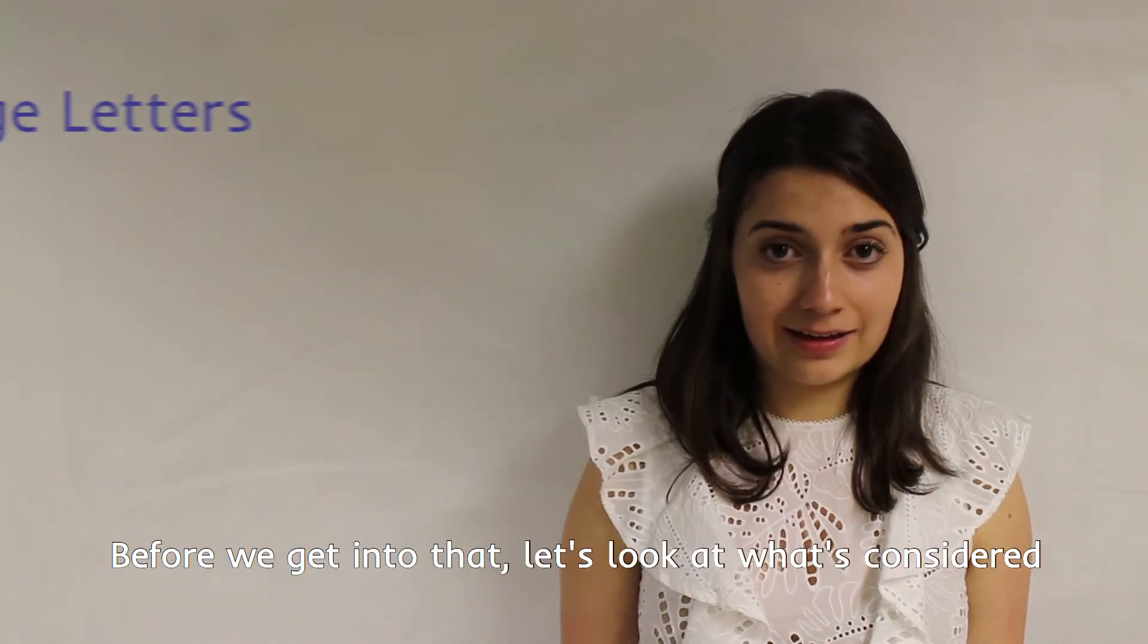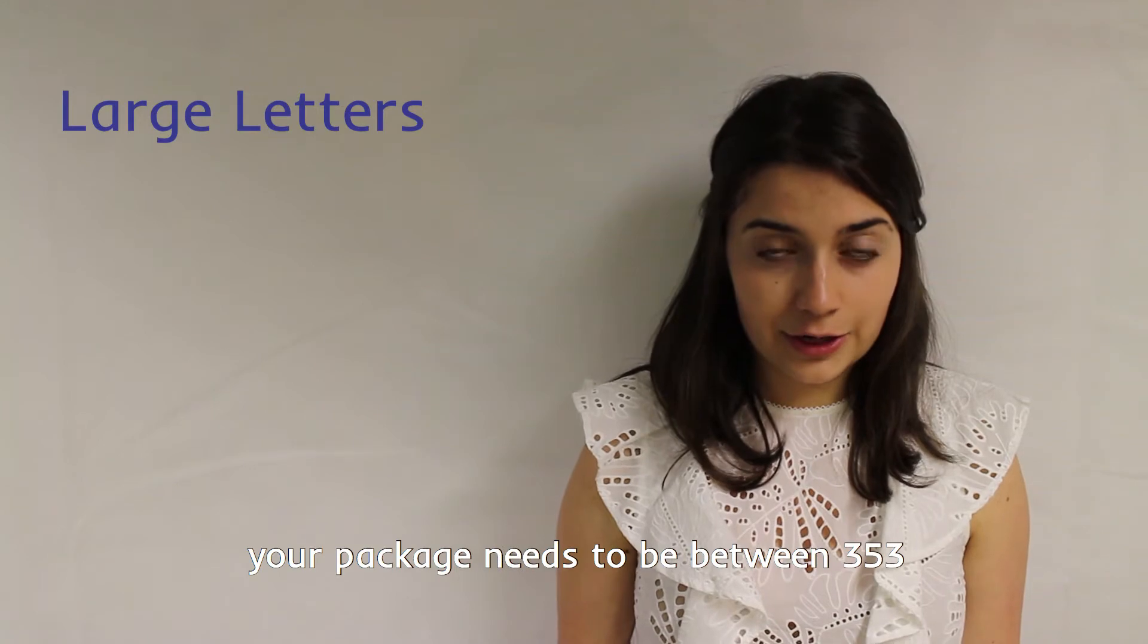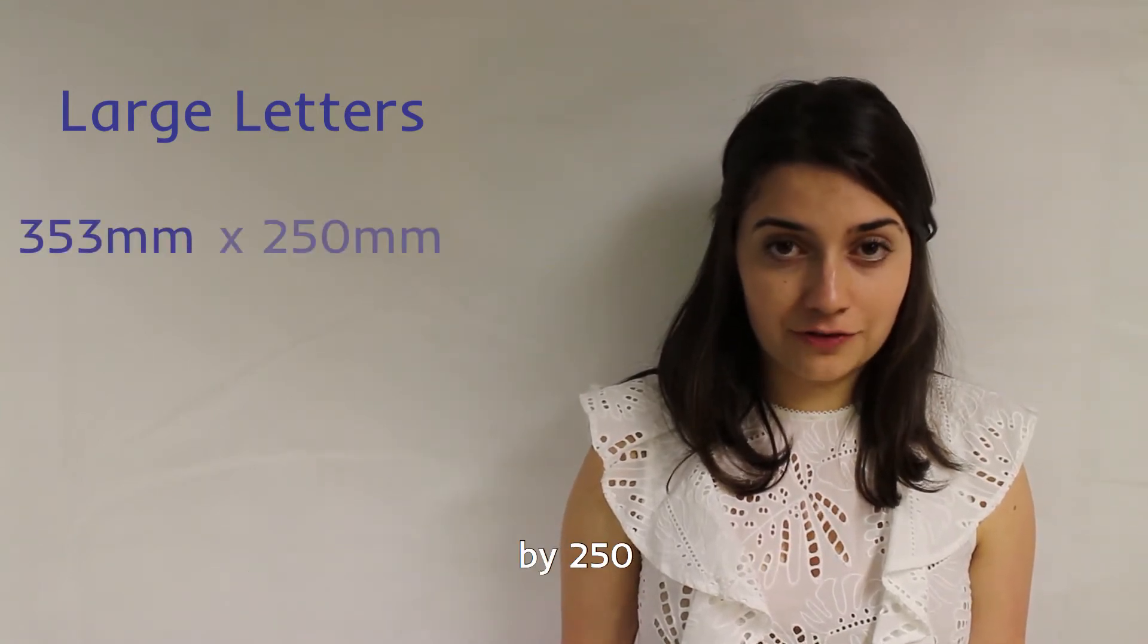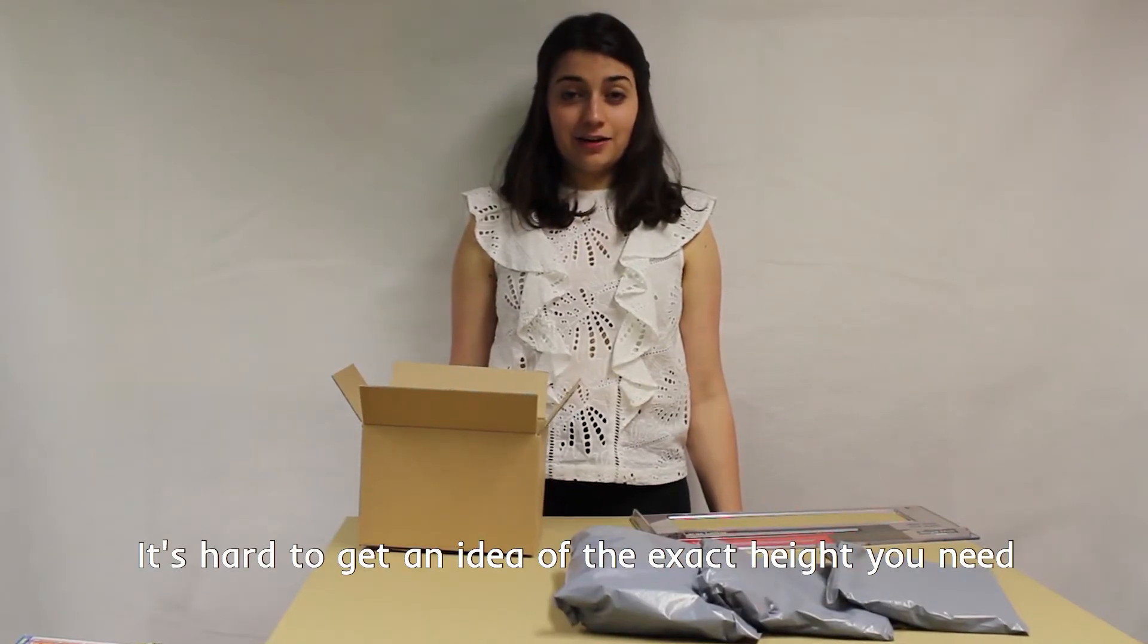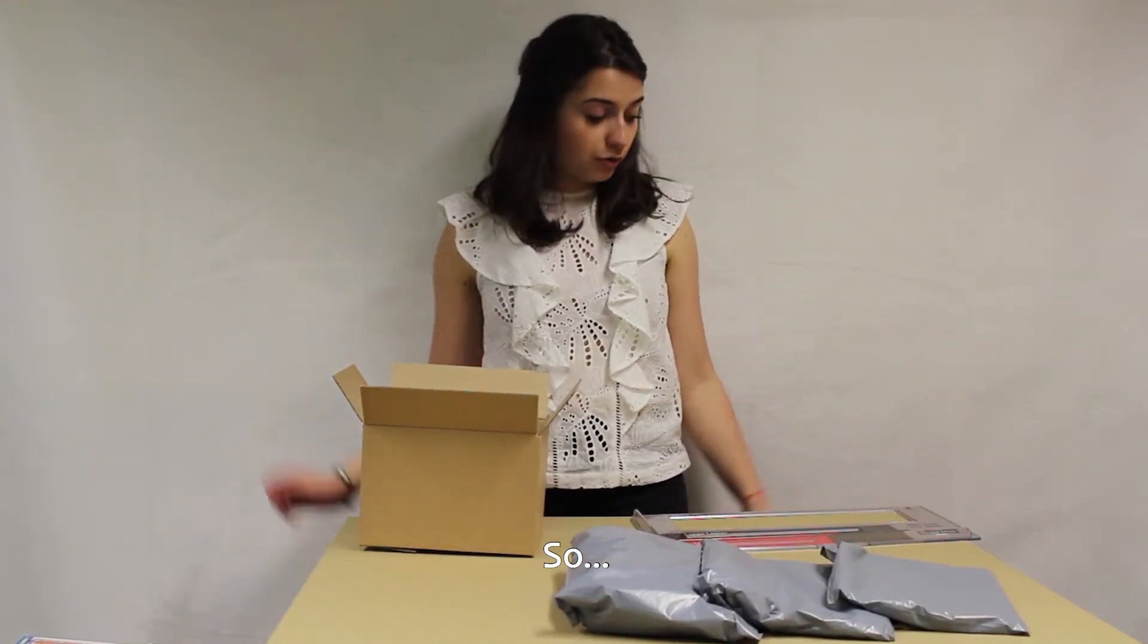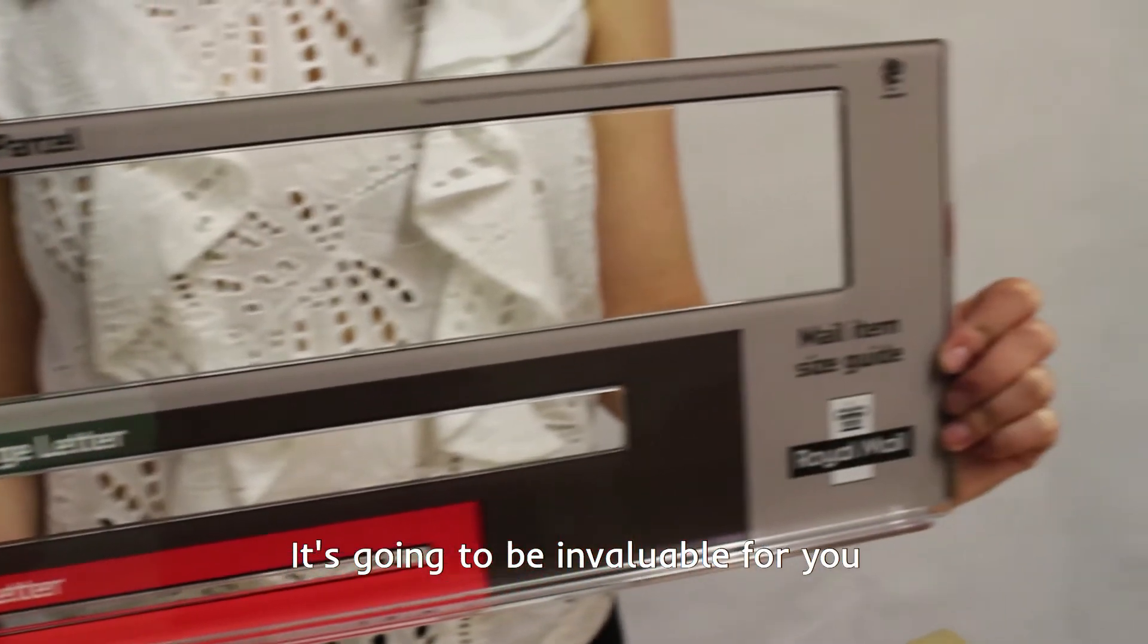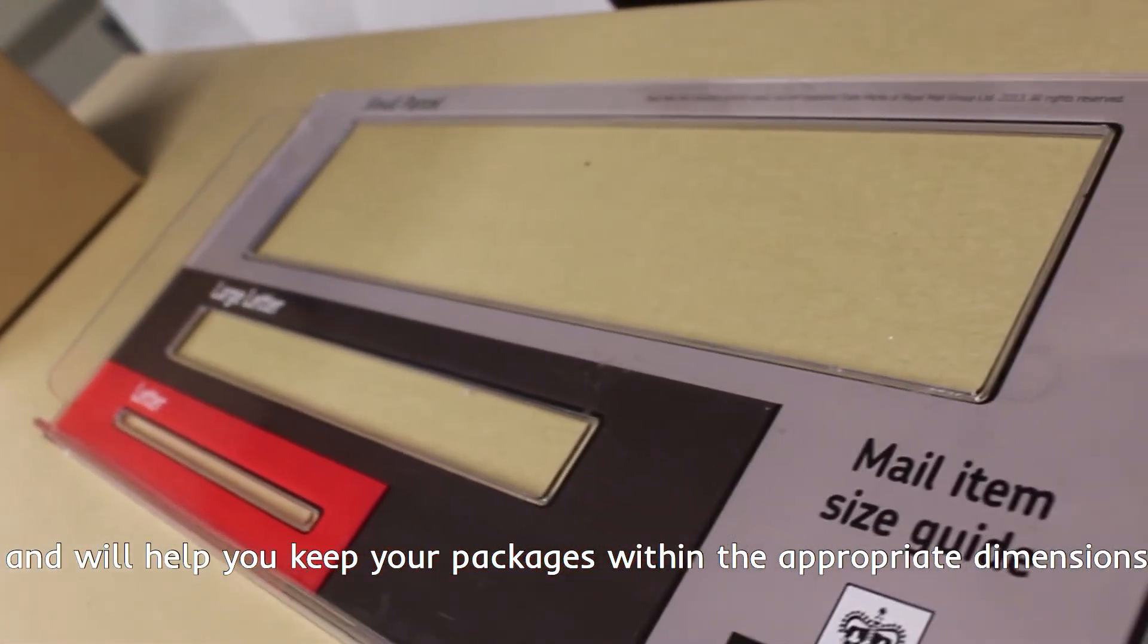Before we get into that let's look at what's considered a large letter by the Royal Mail. It goes like this, your package needs to be between 353 by 250 by 25 millimeters. It's hard to get an idea of the exact height you need so you can just use one of these little guys here. This is a letter size guide, it's going to be invaluable for you and will help you keep your packages within the appropriate dimensions.